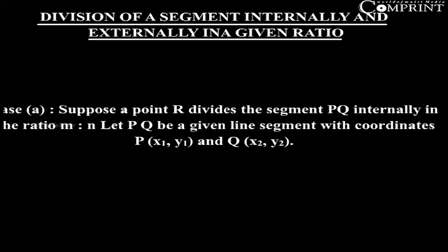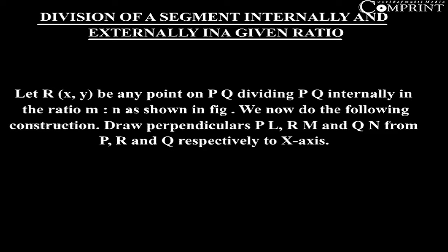Let PQ be the given line segment with coordinates P(x₁, y₁) and Q(x₂, y₂). Let R(x, y) be any point on PQ dividing PQ internally in the ratio m:n as shown in figure. We now do the following construction.